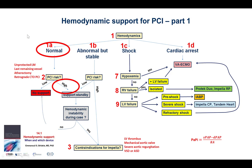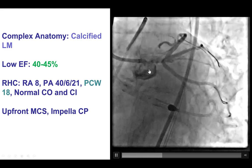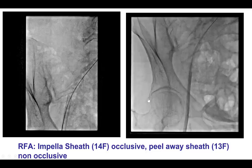Regarding hemodynamic support, this is the algorithm discussed in video 14.1. This is a case that has high risk of PCI, but the baseline hemodynamics are normal. In most cases like this, we use standby support as the patients are often doing well. However, in this particular case, we decided to use prophylactic hemodynamic support because we are concerned about the complexity of the lesion given the severe calcification. So we decided to use hemodynamic support with an Impella CP device.